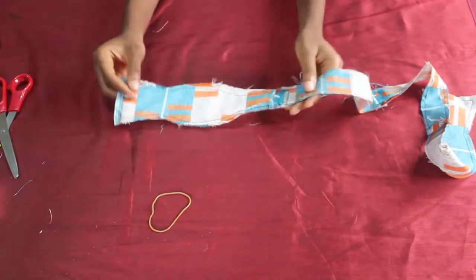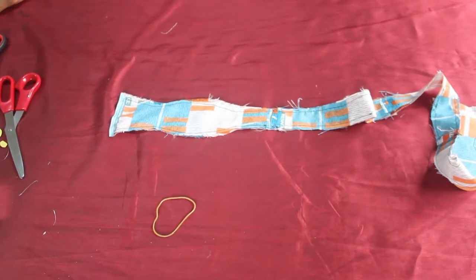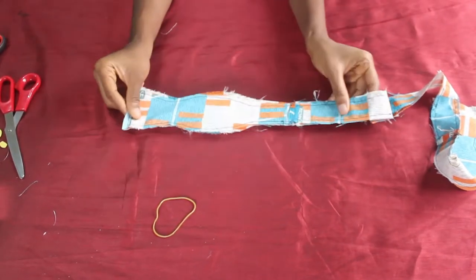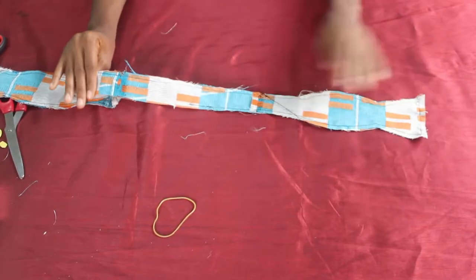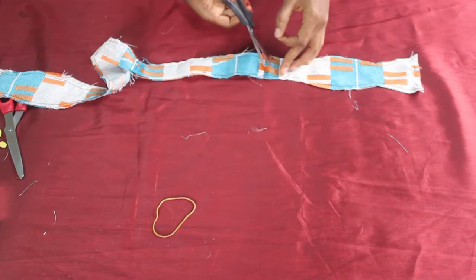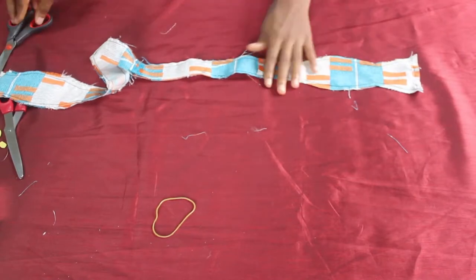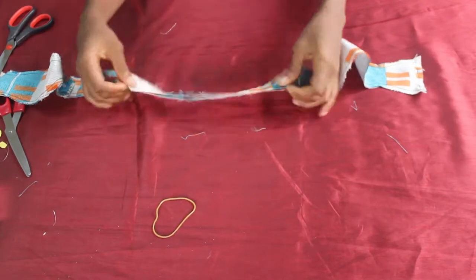Now that we're done with joining the pieces together, we are left with just one single piece of long fabric. As you can see, I left an opening on one side of the fabric.